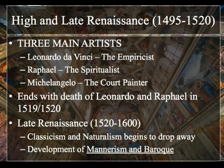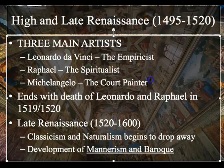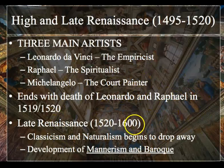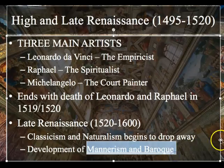The High and Late Renaissance really focuses around three main artists: Leonardo da Vinci, Raphael, and Michelangelo — known as the empiricist, the spiritualist, and the core painter. This all ends with the deaths of Leonardo and Raphael in 1519 and 1520, although Michelangelo lives quite a bit longer. I'm also going to talk a little bit about Mannerism and Baroque here.